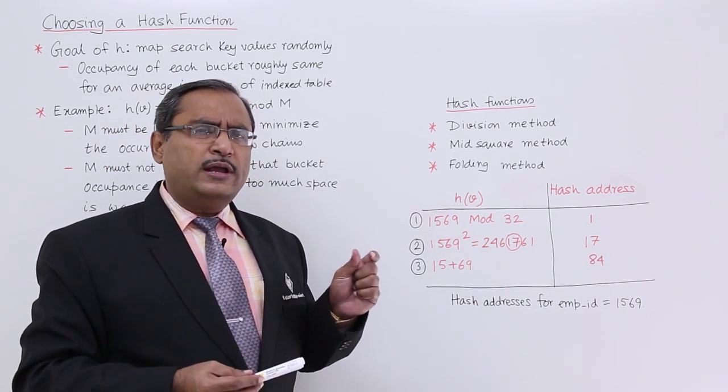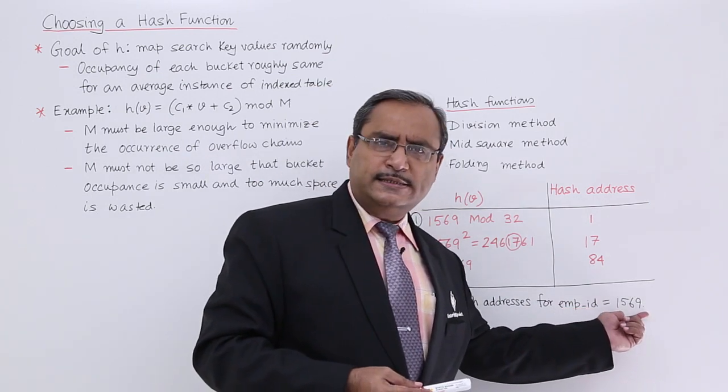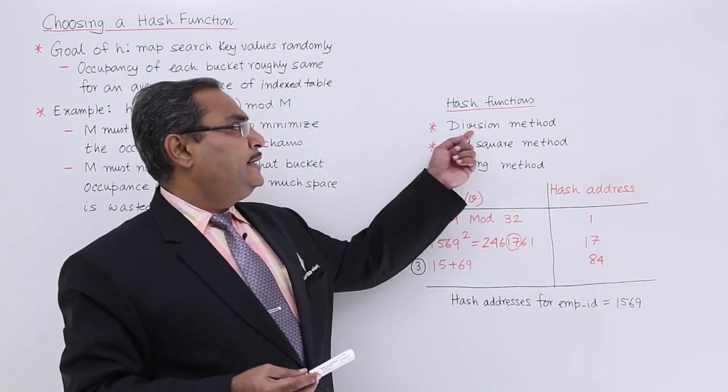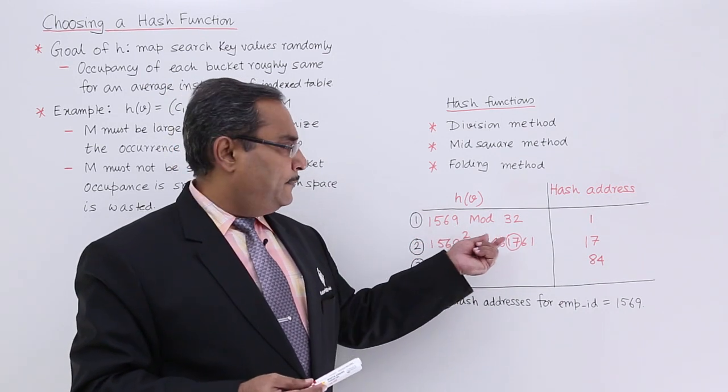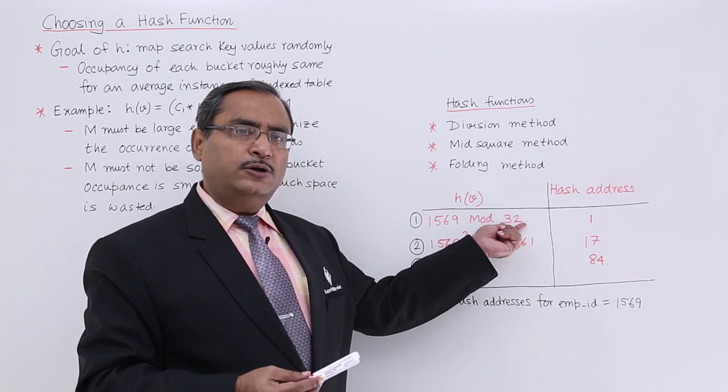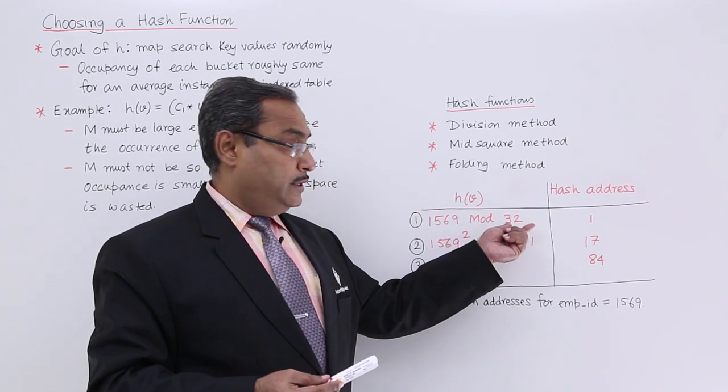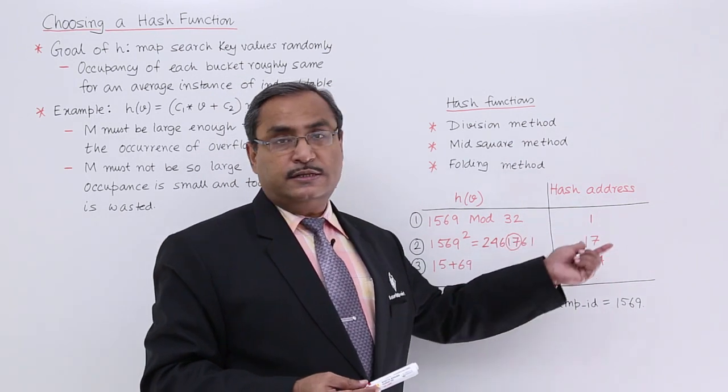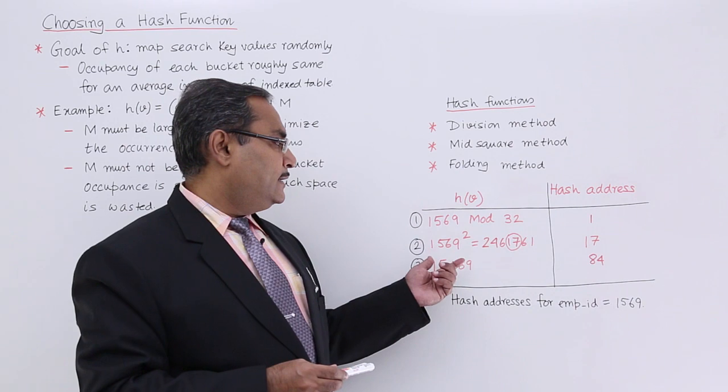Let us suppose that is one employee id. The employee id whatever you have selected is 1569. Now in case of division method we are selecting this particular value for m. Here we have taken m = 32. So 1569 mod m, here you see I am getting the hash address 1. So it will be going to the bucket number 1 in that case.